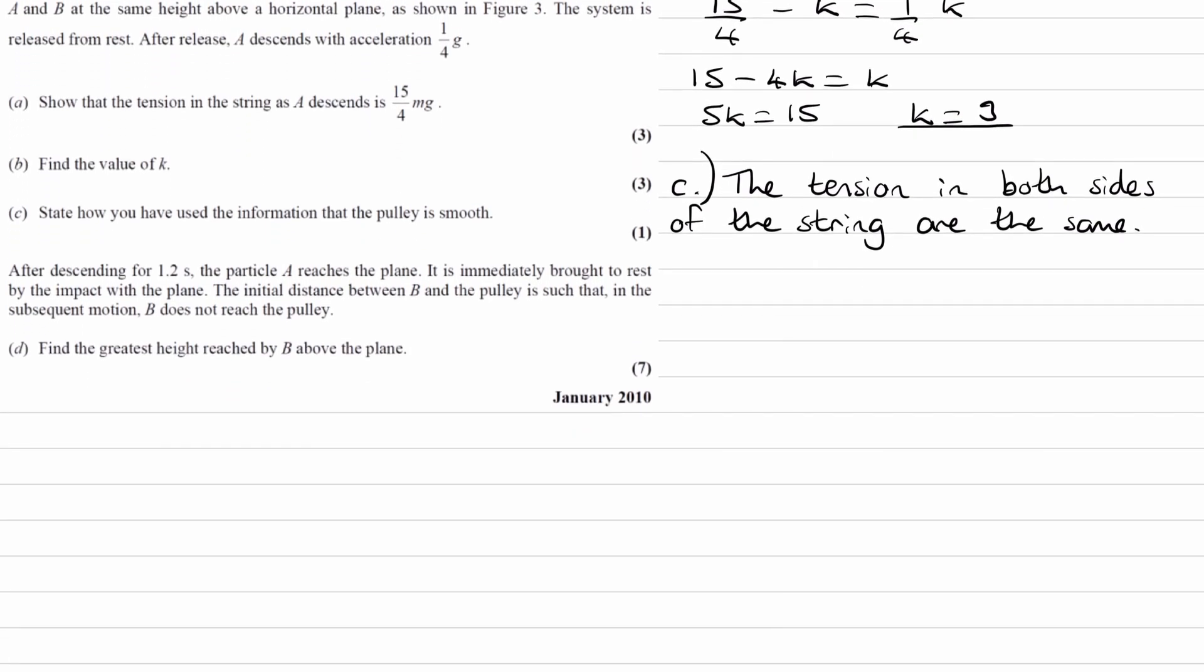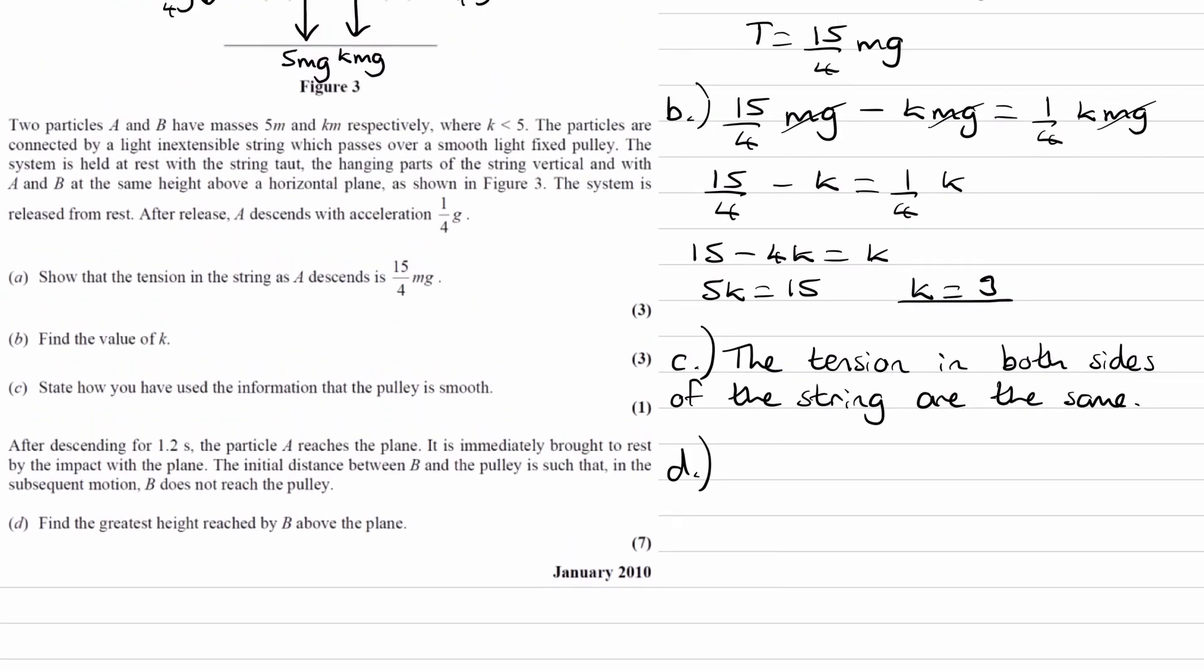And for the final part, part D. This is where the question starts to get difficult. So it says, after descending for 1.2 seconds, A reaches the plane. It's brought to rest. And then we're told that B does not reach the pulley. We're trying to find out the greatest height reached by B above the plane. So we're going to split this up into two stages. I'll explain why.